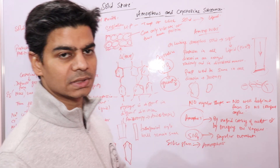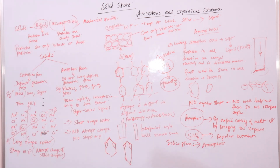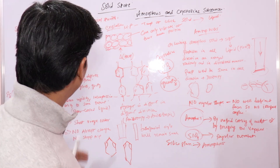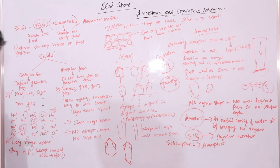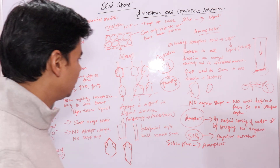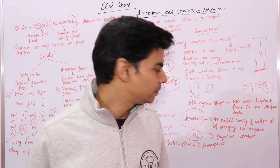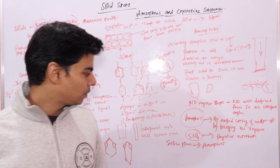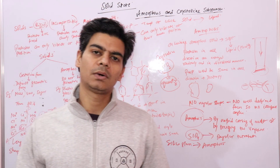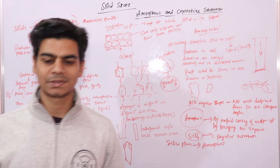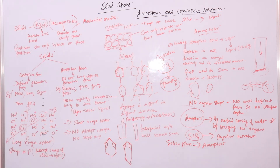I hope all this is clear to you. This is important — the difference between crystalline and amorphous form, and all these points are important. In the next video lecture, we will talk about crystal lattice and unit cell.